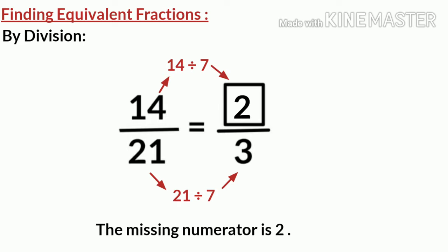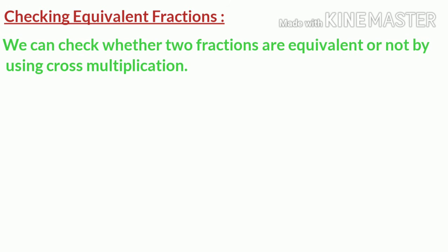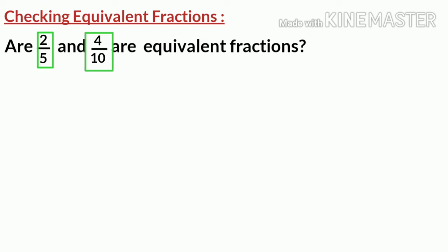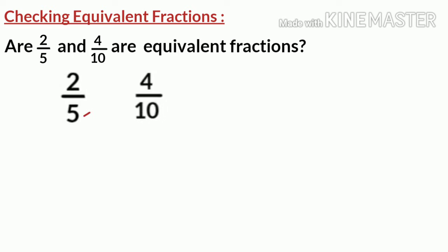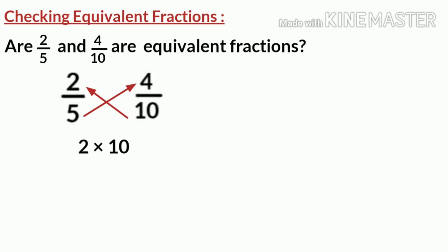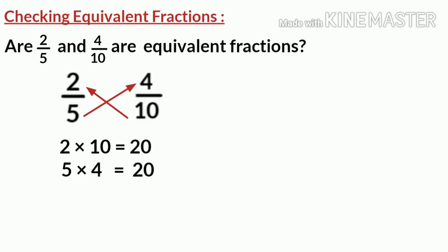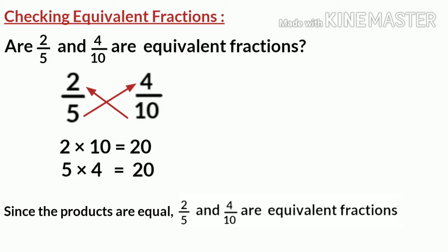Now let's discuss checking equivalent fractions. We can check whether two fractions are equivalent or not by using cross multiplication. Look at this question: we have to check if 2 by 5 and 4 by 10 are equivalent. First, we cross multiply: 2 multiplied by 10, and 5 multiplied by 4. We know that 2 multiplied by 10 is 20, and 5 multiplied by 4 is 20. Since both products are equal, 2 by 5 and 4 by 10 are equivalent fractions.